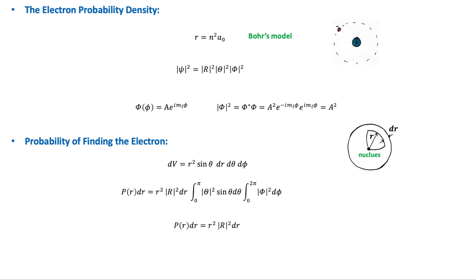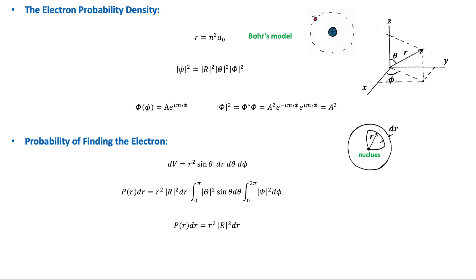We will now find the probability density of an electron in a hydrogen atom, which is the probability of finding the electron at a certain location for various different quantum states. As we have seen previously, the wave function psi can be separated into three functions: R, Theta, and Phi, and so the probability density can be written accordingly.